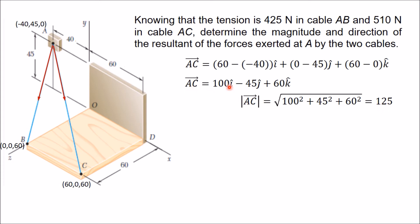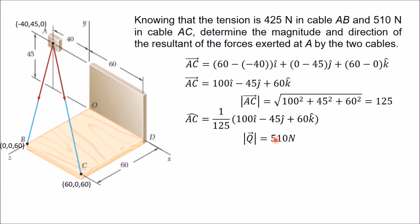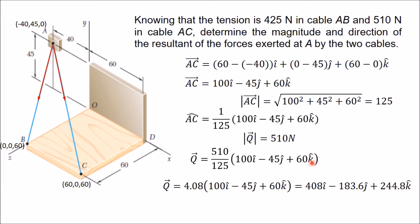Dividing vector AC by 125 gives the unit vector along AC. Now assume the tension in AC as force Q, with magnitude 510 N. Multiply the unit vector by 510: Q = (510/125) × (100i − 45j + 60k), which gives Q = 408i − 183.6j + 244.8k.